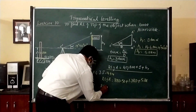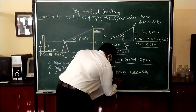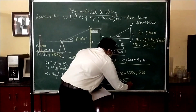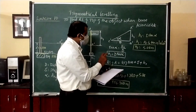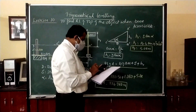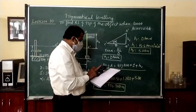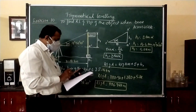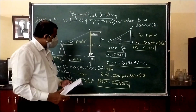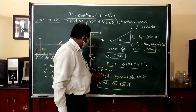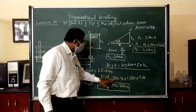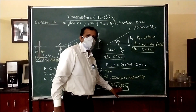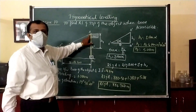Therefore, RL of A = RL of benchmark + S + H1 = 880.5 + 1.380 + 5.08 = 886.960 meters. This is how we find the RL of the top of station A when the base is accessible. Once again: H1 = 14.4 × tan(19°58'20") = 5.08 m, and RL of A = 880.5 + 1.380 + 5.08 = 886.960 m.